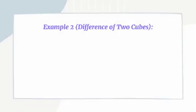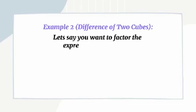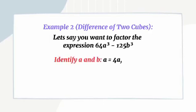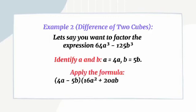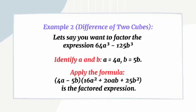Example 2 — Difference of two cubes: Let's say you want to factor the expression 64A cubed minus 125B cubed. Identify A and B: A equals 4A and B equals 5B. Apply the formula: 4A minus 5B, times 16A squared plus 20AB plus 25B squared — that is the factored expression.